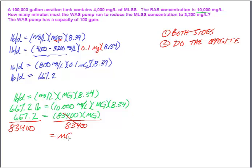This is going to leave me with million gallons. So 667.2 divided by my 83,400 gives me 0.008. Which is not a very useful number, so I'm going to multiply by a million. And I find out that I need to waste a total of 8,000 gallons.